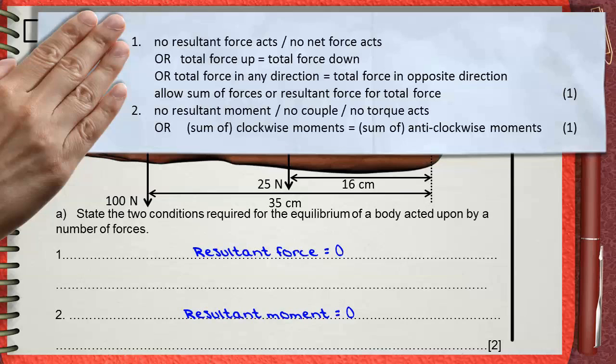The sum of forces, resultant force, and total force all give the same meaning. Number two, you can say no resultant moment, no couple, or no torque acts. You can also say sum of clockwise moments equals the sum of anticlockwise moments. These are several meanings for the same expression.